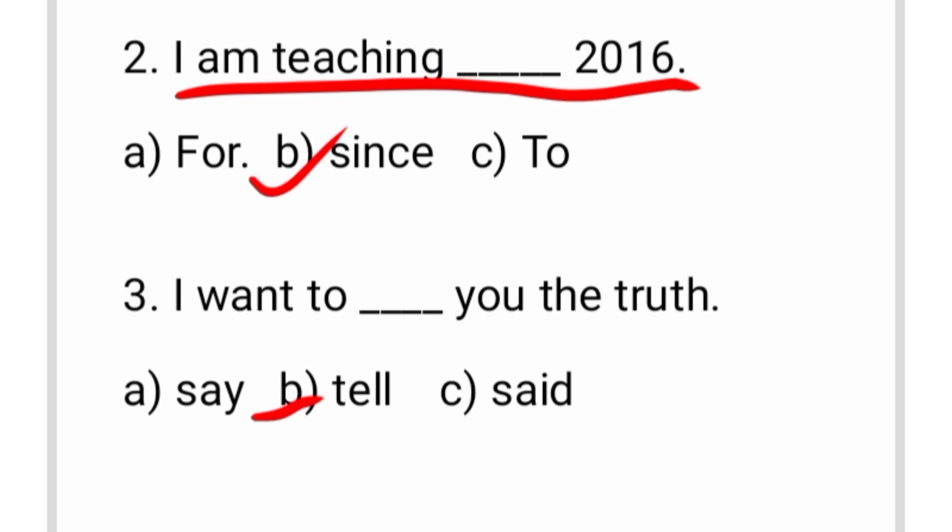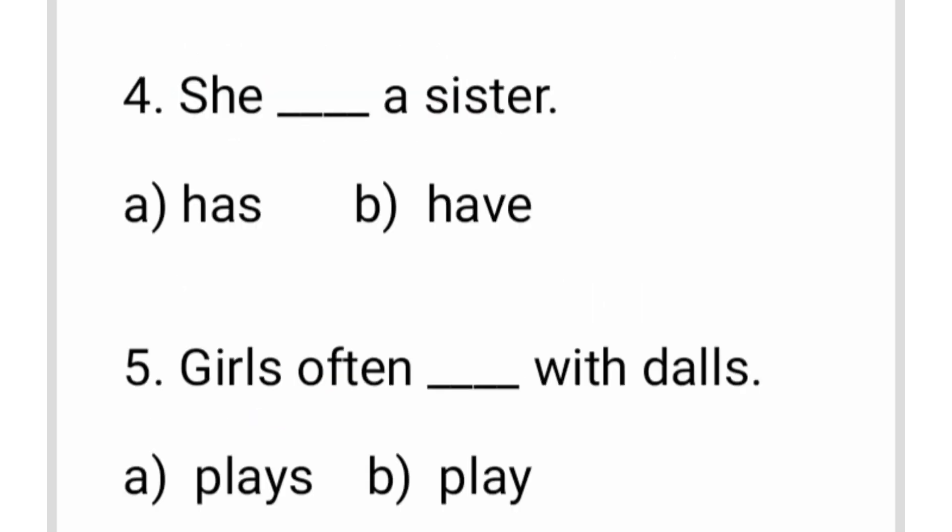The sentence is in present tense, as you can see, so we use 'tell'. Next is question number four: she dash a sister. The options are 'have a sister' and 'has a sister'.